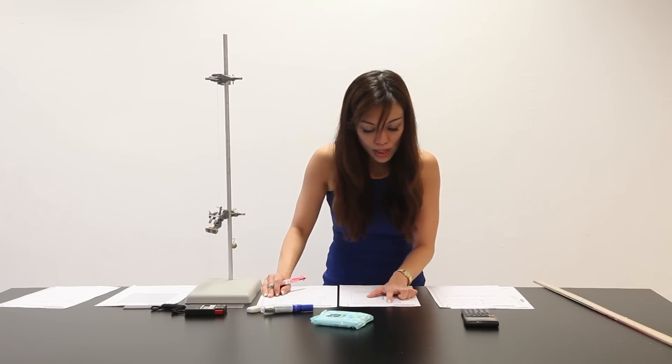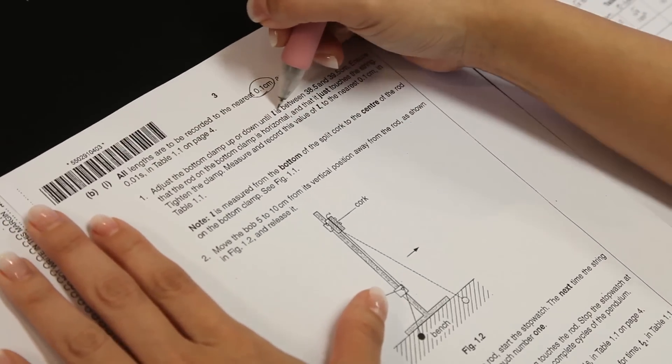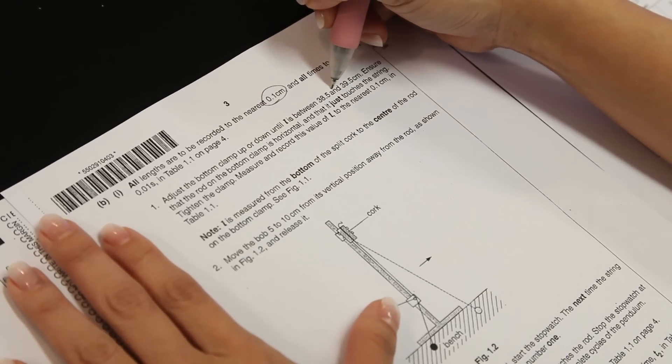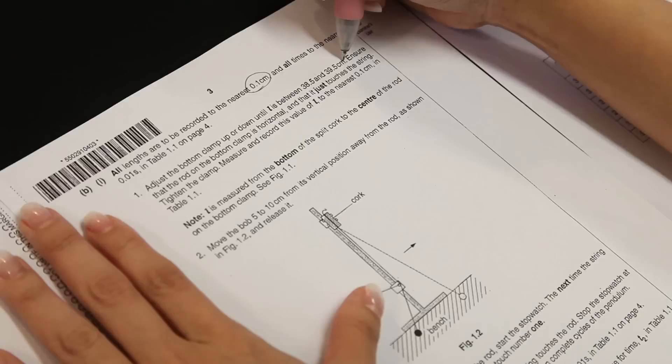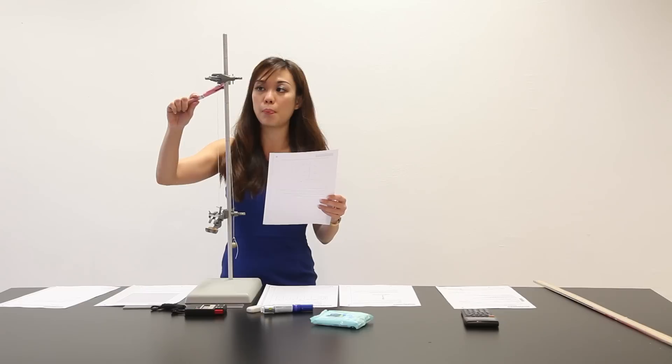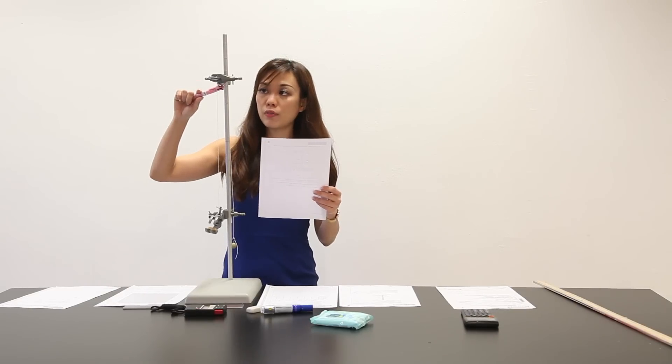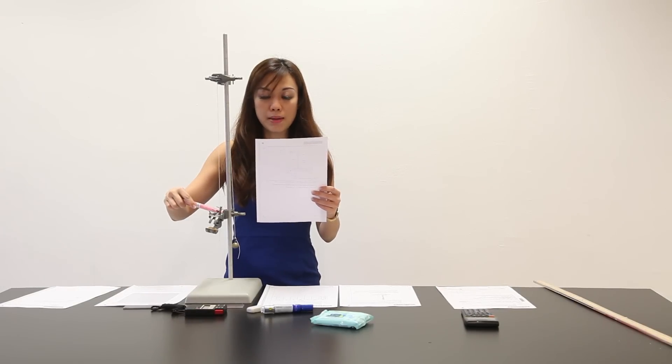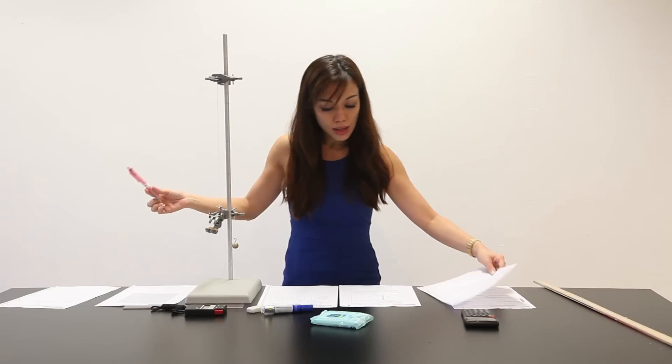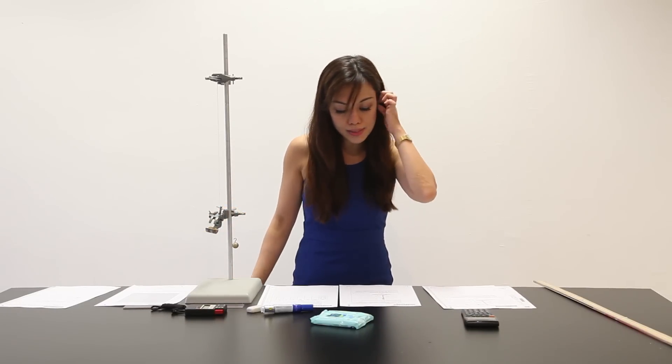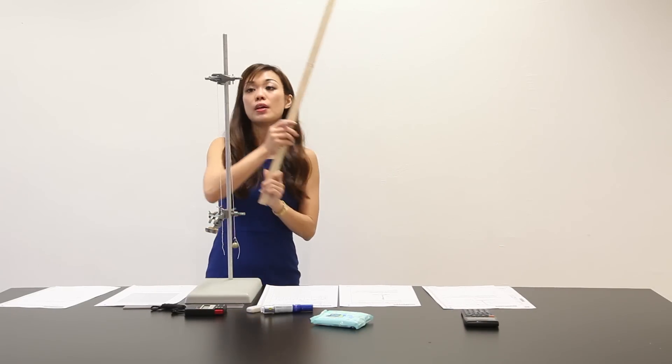And then, let's go on. It says here, that adjust the bottom clamp up and down until L is between 38.5 and 39.5 cm. So, which means that my curly L, which is this portion from the bottom of the split cord here, all the way down to the bottom clamp here, it must be between 38.5 cm and 39.5 cm.